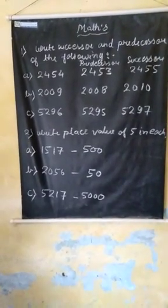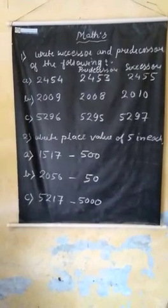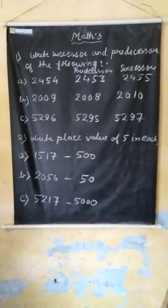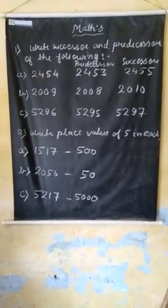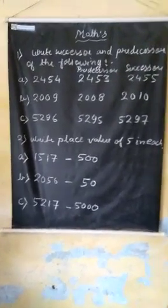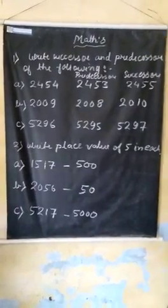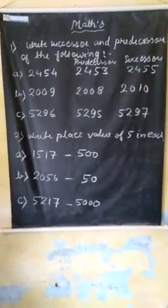Question number 3: the number 5296. When we subtract one from six, it will be 5295. And when we add one, it will be 5297.